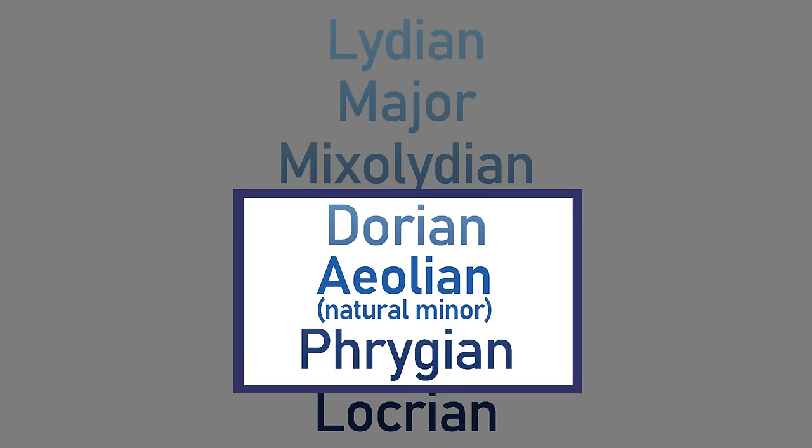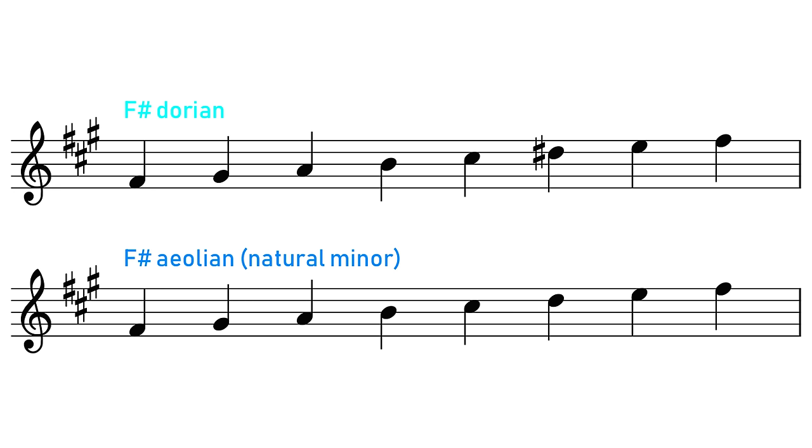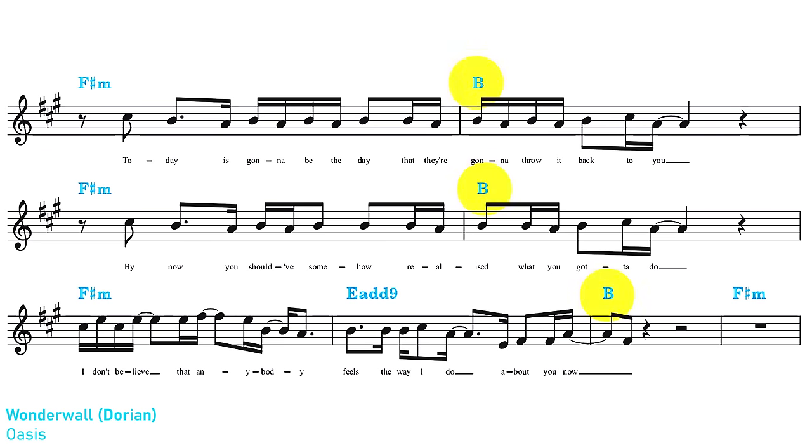So now let's place Wonderwall into the slightly brighter version of the minor scale, Dorian. The only difference between aeolian and Dorian is that in Dorian the sixth degree has been raised up. So if I just get that raised sixth into the harmony in these B major chords, we will be placing Wonderwall into the Dorian scale.